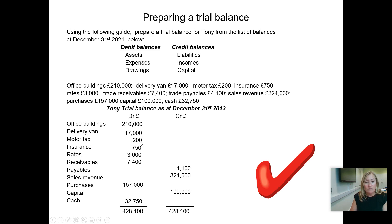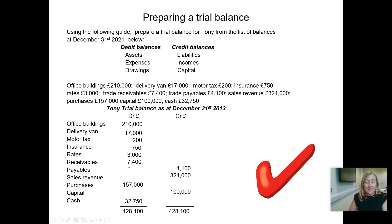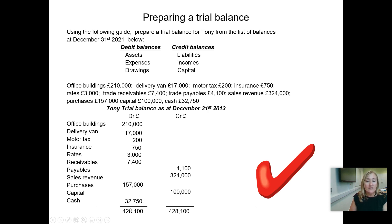Motor tax is an expense — a running cost, also known as road fund licence. Insurance is also a running cost and expense, and so are rates — all of those are on the debit side. Trade receivables are money owed to the business by its customers; they're a type of asset, so they're on the debit side. Trade payables, a liability — money owed to suppliers — are on the credit side. Sales revenue is on the credit side because it's income. Purchases are a type of expense, on the debit side. Capital — £100,000 invested by the owner — is on the credit side. Cash of £32,750 is always an asset, so cash can never be overdrawn unlike the bank account. You should have ended up with £428,100.